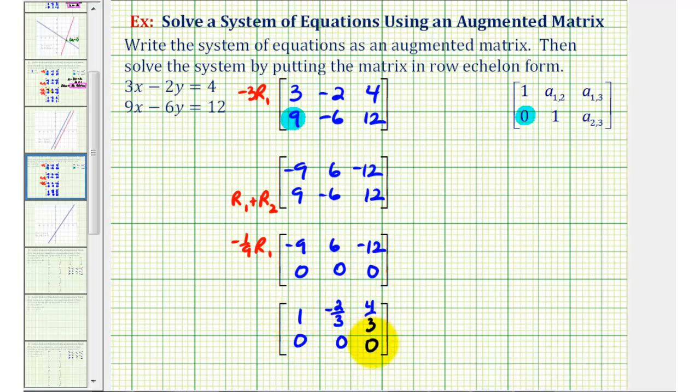So if our matrix is in row echelon form, we're going to write this as a system of equations once again. This first row is telling us that 1x - 2/3y must equal 4/3. The second row is telling us that 0x + 0y equals 0, or 0 equals 0.